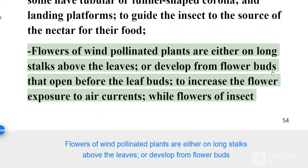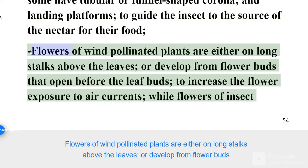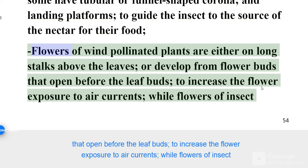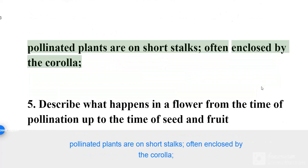Flowers of wind pollinated plants are either on long stalks above the leaves, or develop from flower buds that open before the leaf buds, to increase the flower's exposure to air currents. While flowers of insect pollinated plants are on short stalks, often enclosed by the corolla.